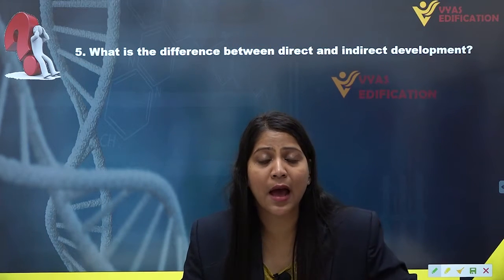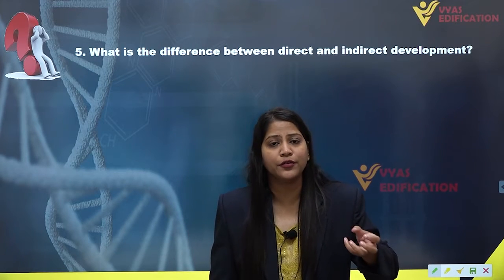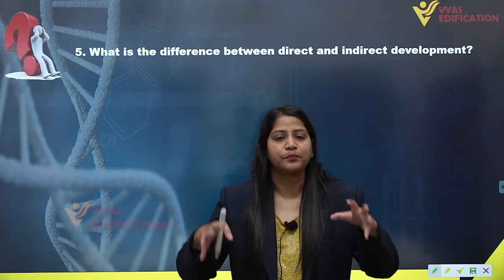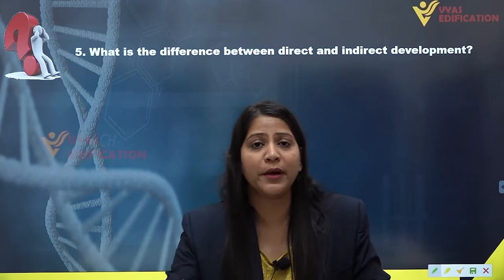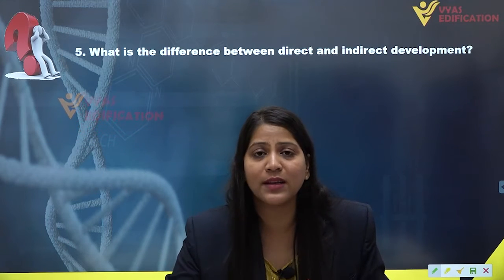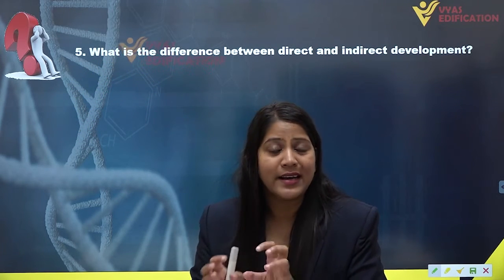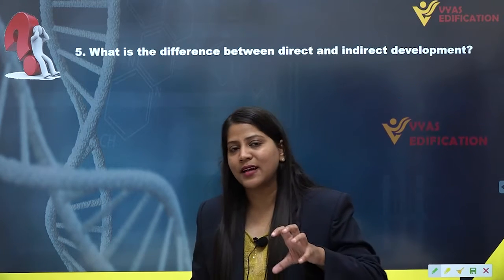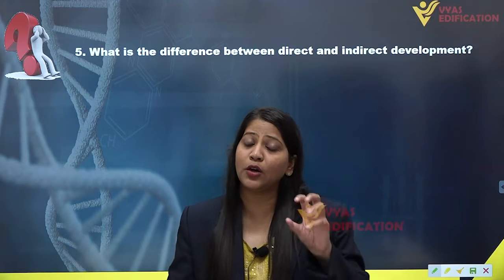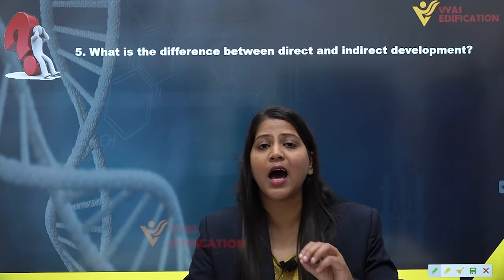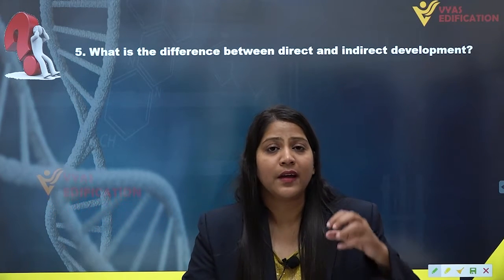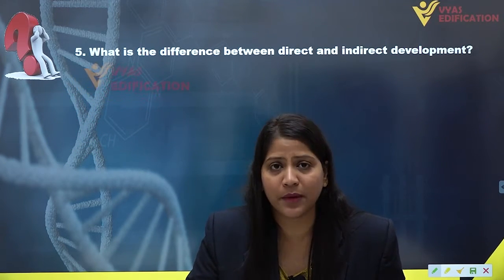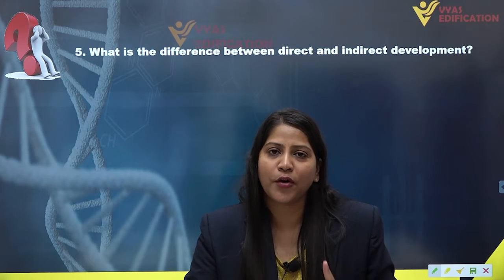In some sexually reproducing organisms, that embryo will transform into a different kind of stage and is not going to transform into an adult directly. If the embryo develops into a larval stage — a less developed larva — and then this larva develops into an adult, this kind of development is known as indirect development, because an intermediate larval stage is present. An important term here is metamorphosis.